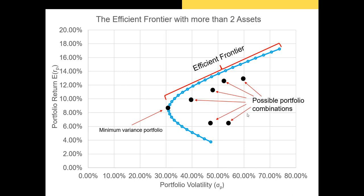Our goal with Modern Portfolio Theory is to identify a portfolio that offers the highest risk-adjusted return, so we want to be somewhere on the efficient frontier. The portfolios to the right of the efficient frontier are not efficient. For example, instead of a portfolio with a 13% expected return and 60% volatility, we can find a portfolio with that same 13% return at only about 46-47% volatility. The best portfolio combination will always be north of the minimum variance portfolio on the blue line.